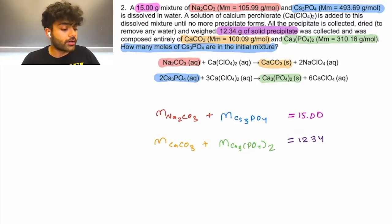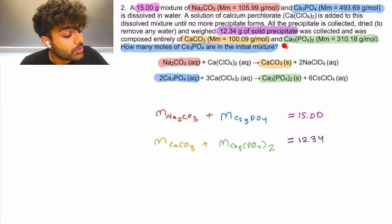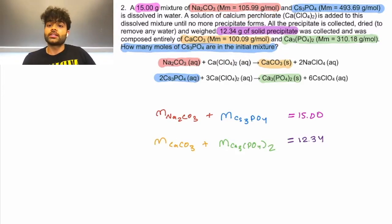So, we've written our situation in terms of mass, and we noticed that in the question we are not actually given any masses to substitute in here. However, we are given molar masses, and we do know that we are solving for the number of moles of CS3PO4 in the initial mixture. So, we know that we can express mass as the number of moles times molar masses. Let's rewrite these masses in that form.